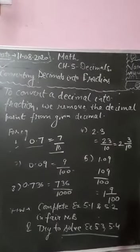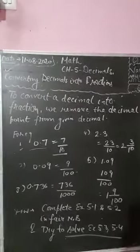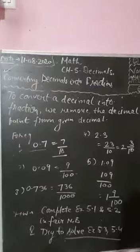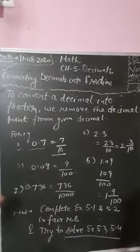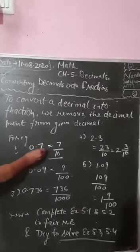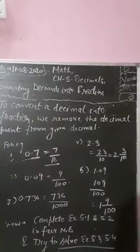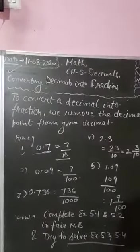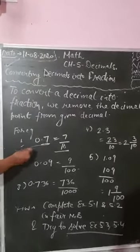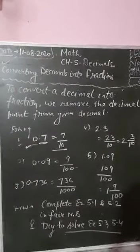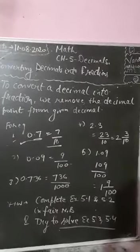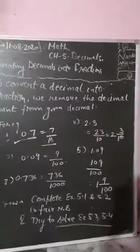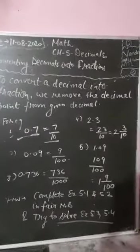When you remove the decimal point, the number becomes the numerator: for 0.7, the 7 becomes the numerator. For the denominator, check the number of digits after the decimal point: if 1 digit, denominator is 10; if 2 digits, denominator is 100; if 3 digits, denominator is 1000. So 0.7 gives 7 upon 10. For the second example, 0.09: the numerator is 9.